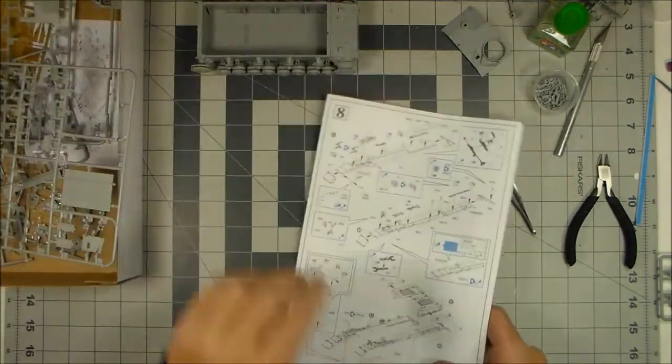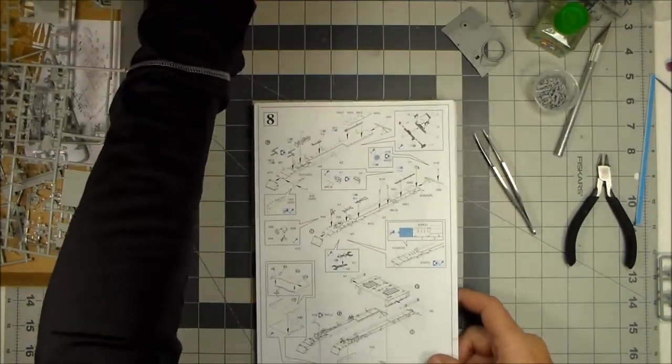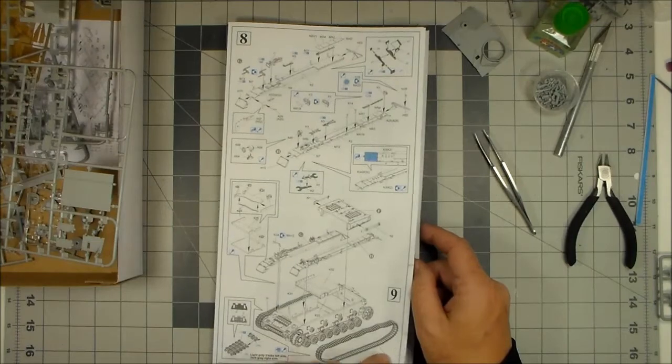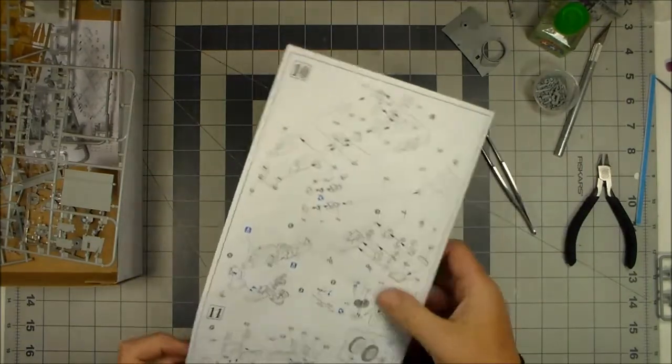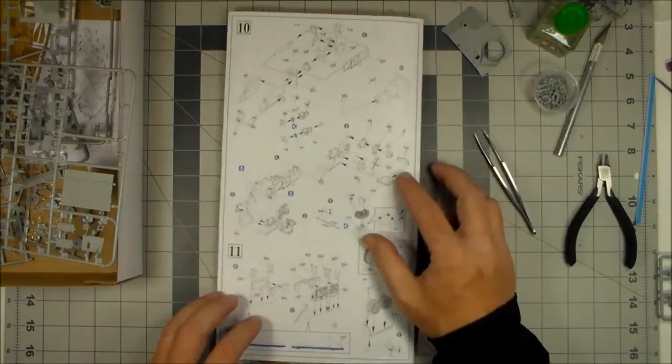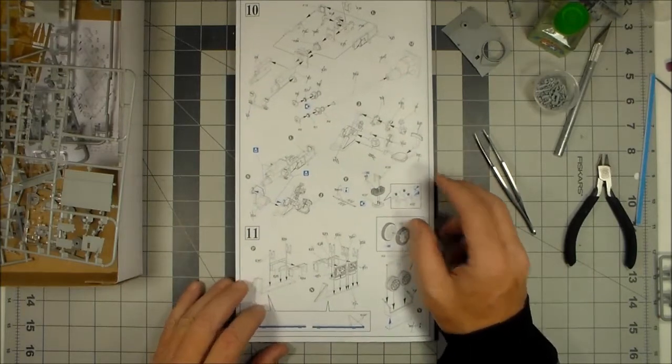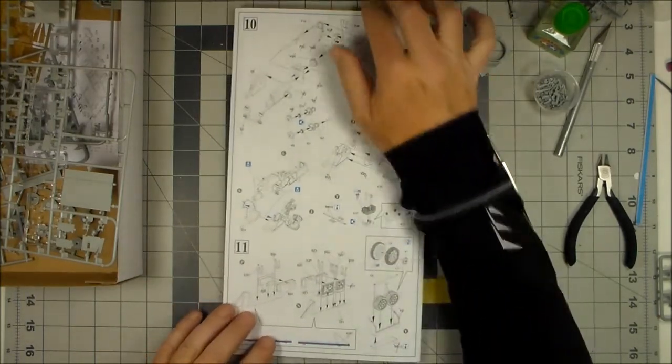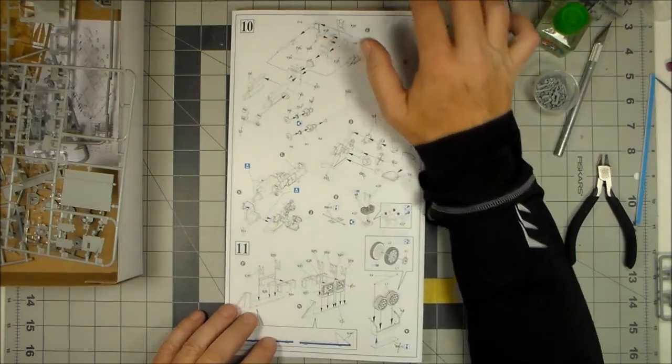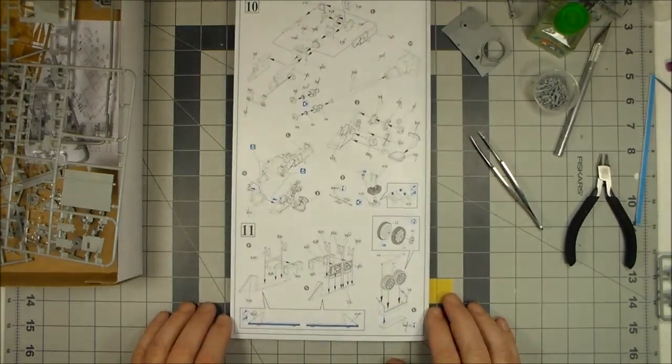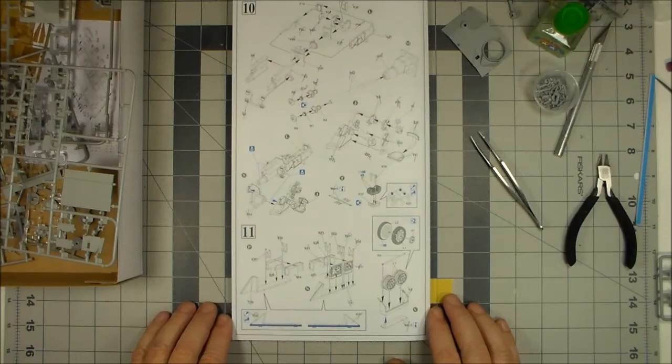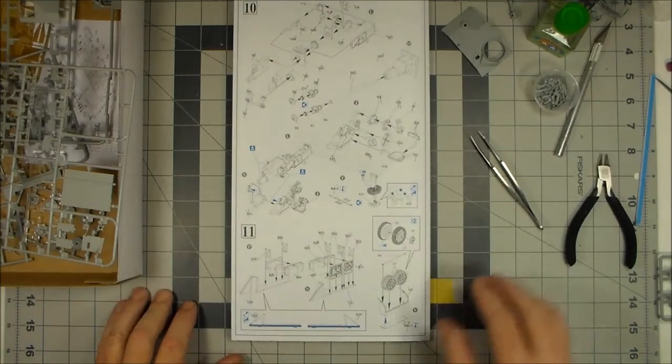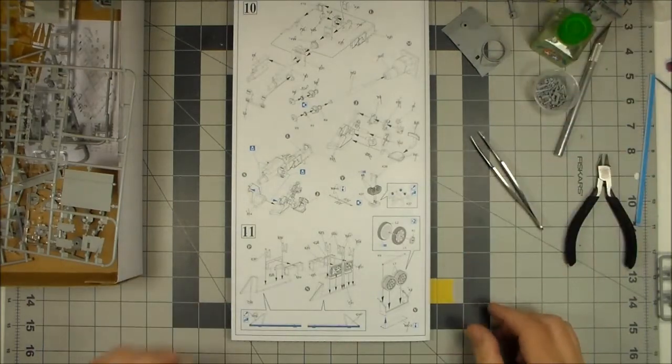So anyway, that's where I am with the group slash buddy build with the Dragon SDKFZ 167 mid production Stug 4. So, I'll call it quits there, get some more work done, and I will come back at a later date with the next update on this particular kit. So as always, thanks for watching Plastic Models by a Regular Dude, and I will see you all next time.